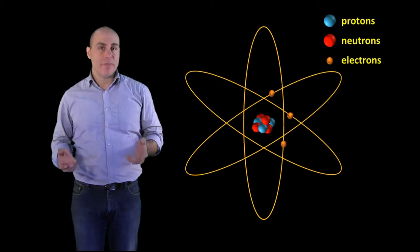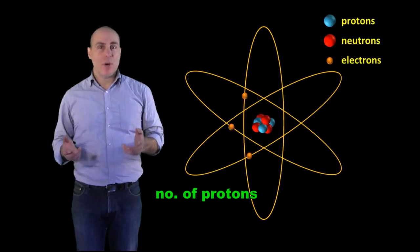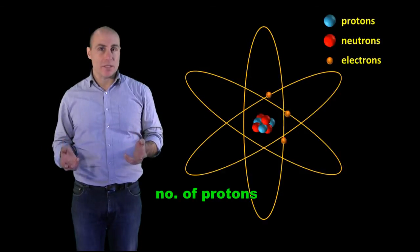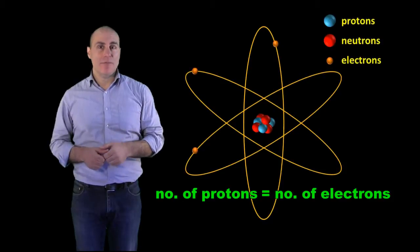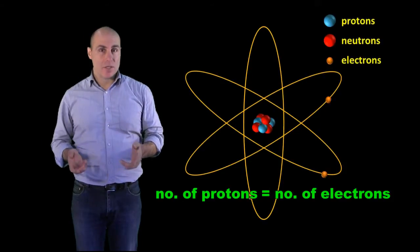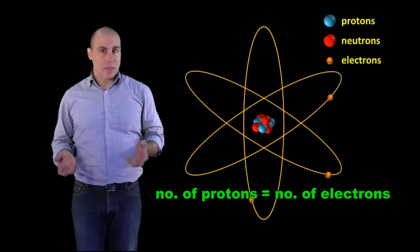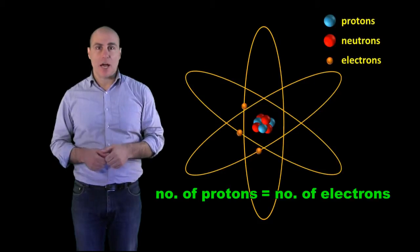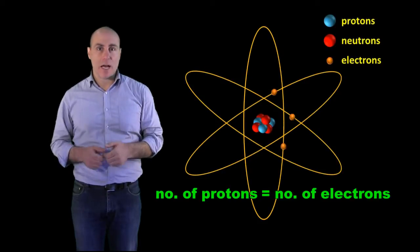In a pure sample of any given element, the number of positively charged protons in the nucleus — in this case 3 — equals the number of negatively charged electrons, so that overall the charge on the atom is zero, since the positive charges balance out the negative charges.